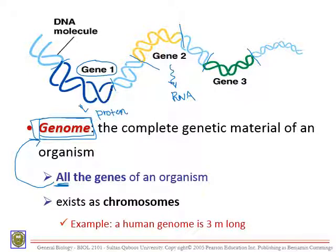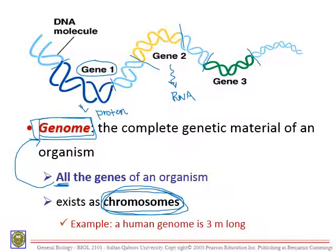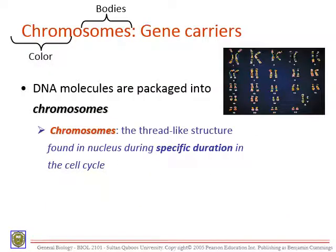The genome exists as chromosomes. Genes exist as chromosomes, and we are going to speak about chromosomes in the next few slides. As an example, the human genome is three meters long from just one cell — because the DNA is twisted and coiled, but if you spread it out, some sources say it can reach two to three meters long. Make sure you differentiate between a gene, which is one segment, and a genome, which is the full set of genes in an organism.